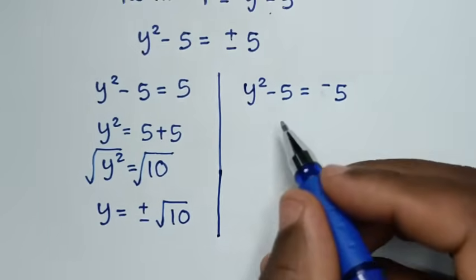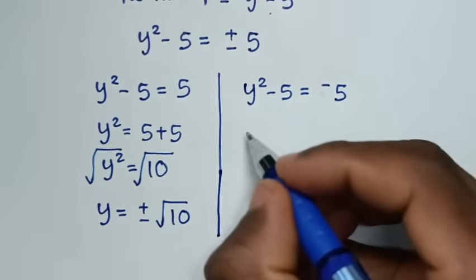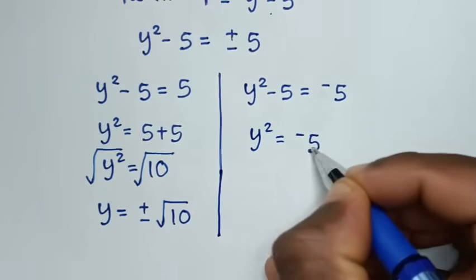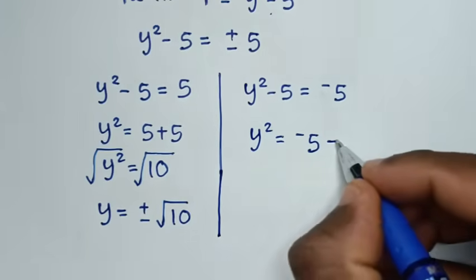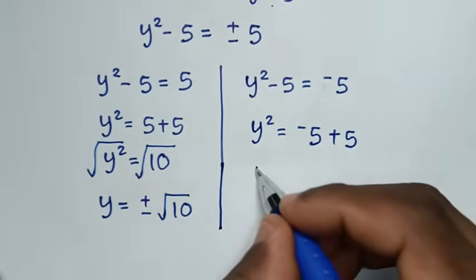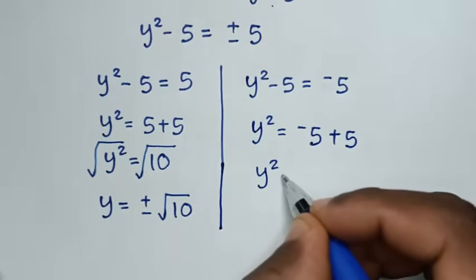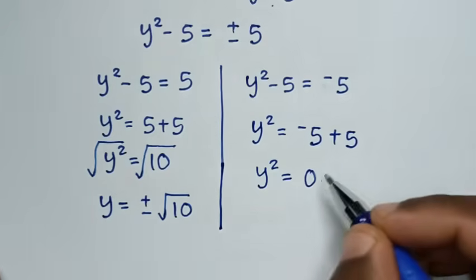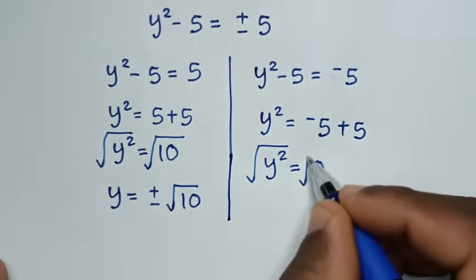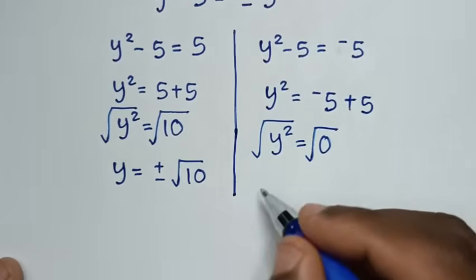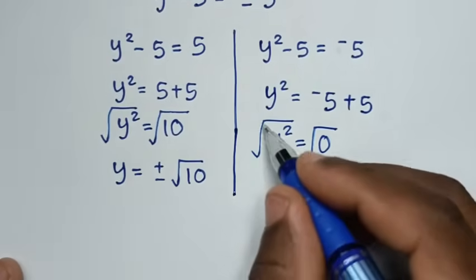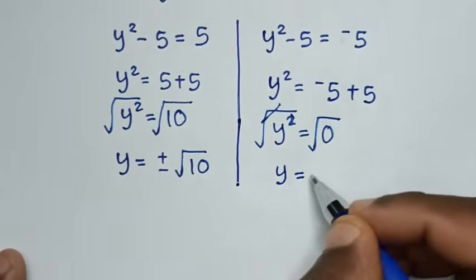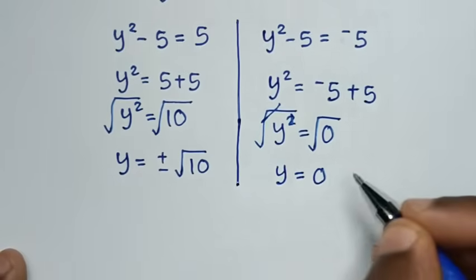Second solution: y²−5 = −5, so y² = −5+5 = 0. Applying square root, y = 0.